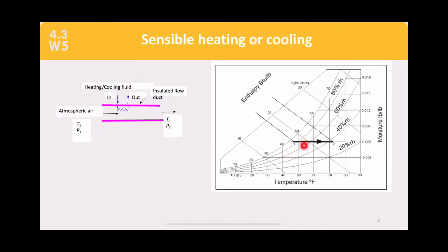On the psychrometric chart, sensible heating or cooling is a straight horizontal line because heat is added without adding any moisture. For example, from 48 degrees Fahrenheit to 72 degrees Fahrenheit — an increment of temperature without any increment of humidity.